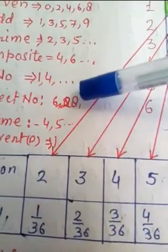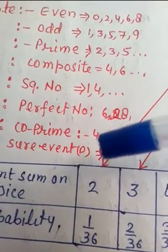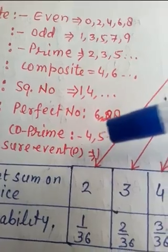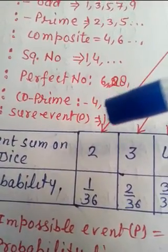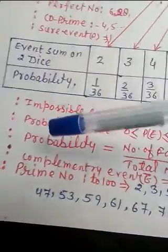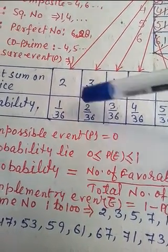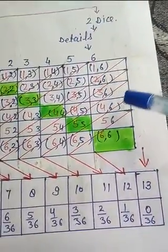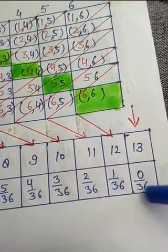Perfect numbers: the sum of its factors equals the number itself. Co-prime numbers have no common factor other than 1. Sure event: if probability of an event equals 1. Impossible event: if probability of an event equals 0. For example, sum of 13 on two dice has probability 0 upon 36, which equals 0, making it an impossible event.